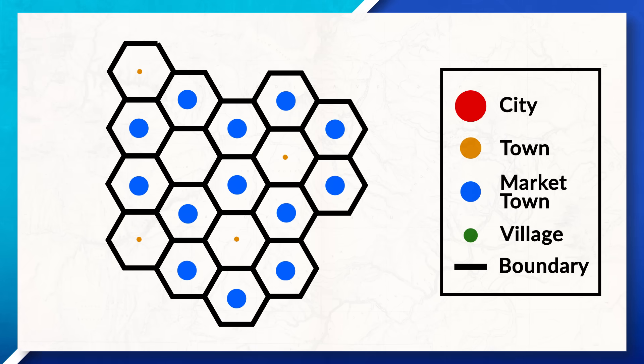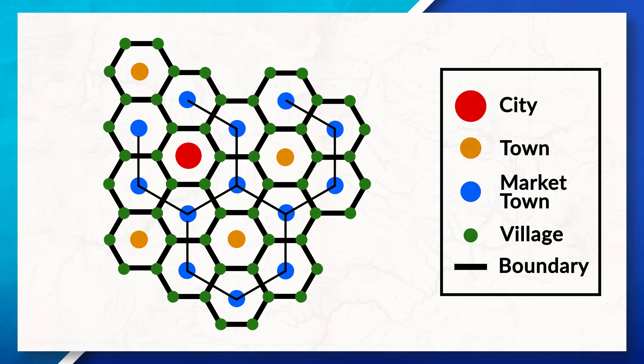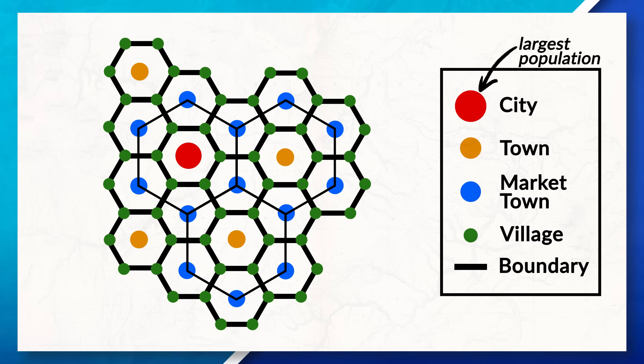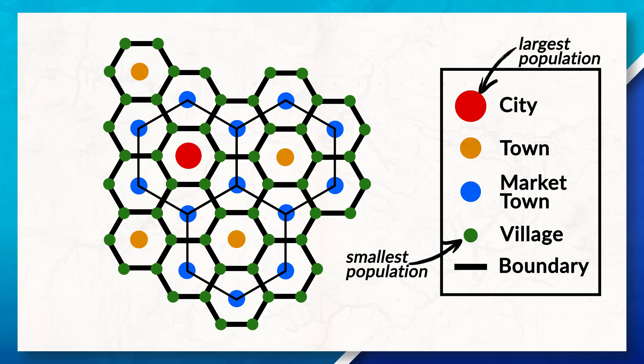Okay, so now we have an understanding of how this model works with different businesses and understand the concept of threshold and range. Let's now go back to the model and look at how it works with the location of different settlements. Right away we can see this model is showing an urban hierarchy. The model has a city at the top of the urban hierarchy with towns, market towns, and villages below. Notice that there is only one city serving the surrounding settlements. This highlights the range of the city.